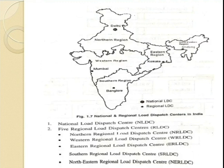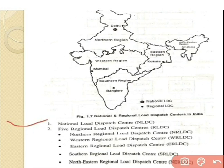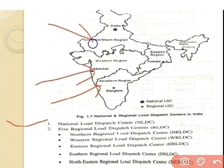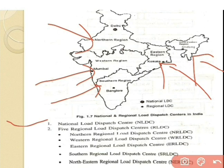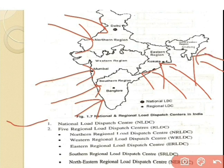In India, the National Load Dispatch Center, considered as NLDC, is located at Delhi, and there are five Regional Load Dispatch Centers, considered as RLDC. These are the Southern region, Western region, Northern region, Eastern region, and North-Eastern region. Their individual branch locations are: Delhi for Northern, Mumbai for Western, Bangalore for Southern, Kolkata for Eastern, and Shillong for North-Eastern. All regional load dispatch centers located in India are mentioned in this figure.